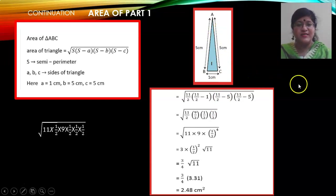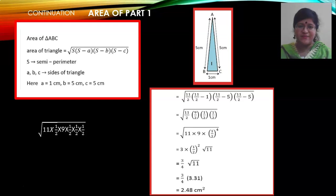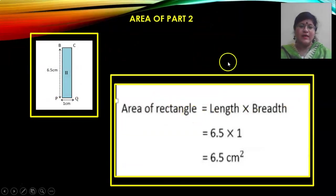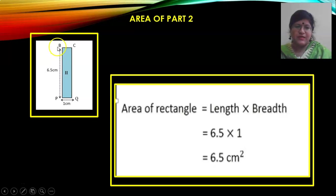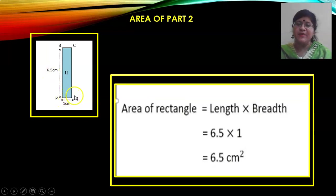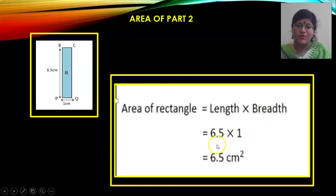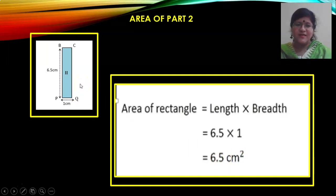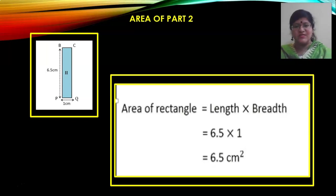Now we will calculate the area of the second part, the body of the plane, which is in the shape of a rectangle. In rectangle PQCB, the length BP is given as 6.5 cm and the breadth PQ as 1 cm. Area of rectangle = length × breadth = 6.5 × 1 = 6.5 cm². This is relatively easy. With this, we finish parts 1 and 2.